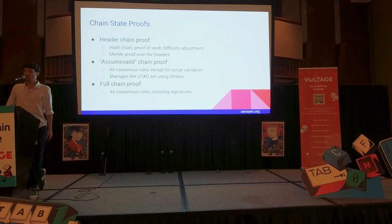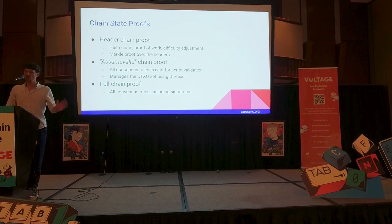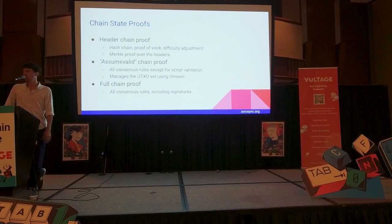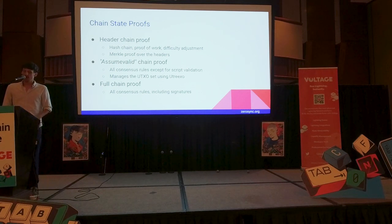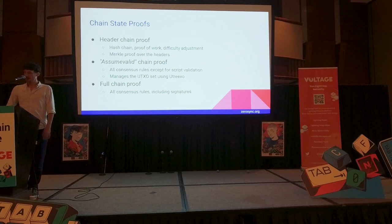And the third proof that we are going to build is the full-chain proof, which actually verifies all consensus rules — with a small asterisk we'll explain later, that it's not quite all. But all the main consensus rules can be verified in the full-chain proof, including the signatures, and basically all of the data in the blockchain can be verified in the full-chain proof. Very quickly. We will take some time until we get to the full-chain proof, but we have made significant progress on the other ones.